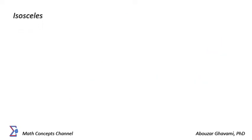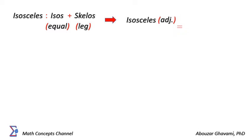Isosceles is a late Latin and Greek word that is formed from two words: isos and skellos. Isos means equal and skellos means leg. Isosceles is an adjective that means having equal legs.